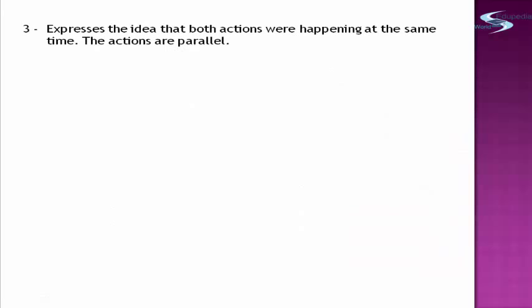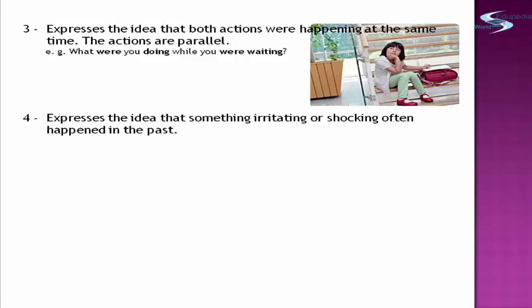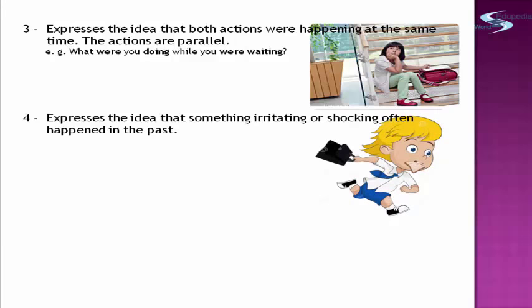The third usage of the past progressive tense is that it expresses the idea that both actions were happening at the same time — the actions are parallel with each other. The fourth usage is that it expresses the idea that something irritating or shocking often happened in the past. Example: 'He was always coming to class late.' There is the word 'was always,' so maybe it becomes irritating.